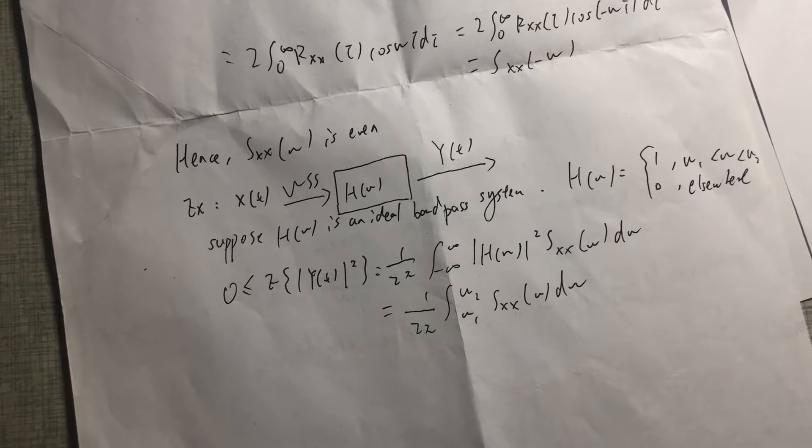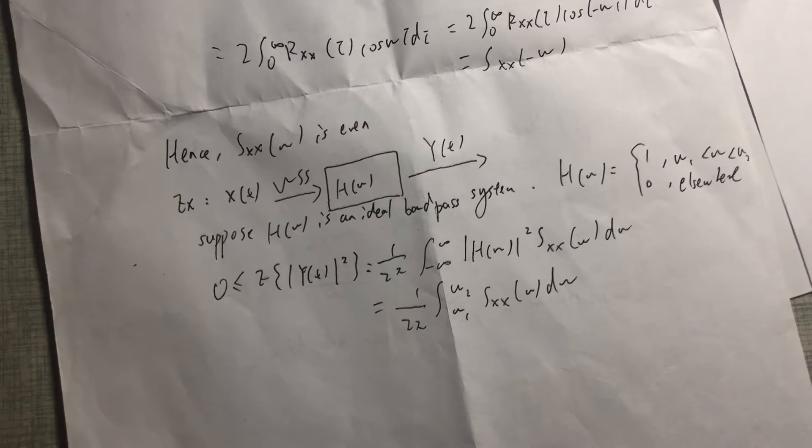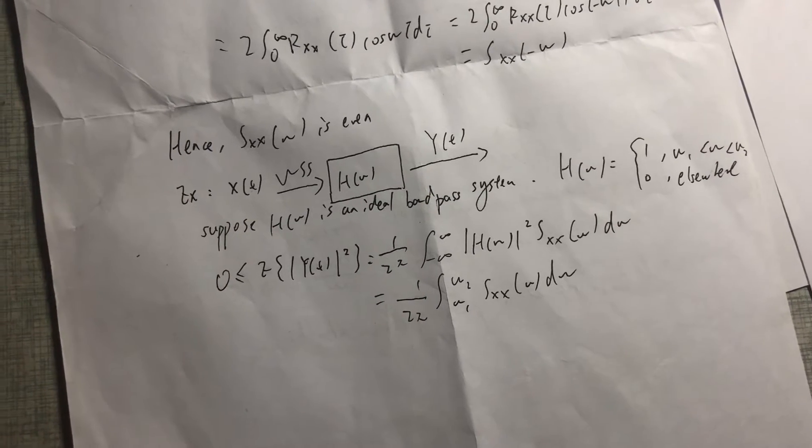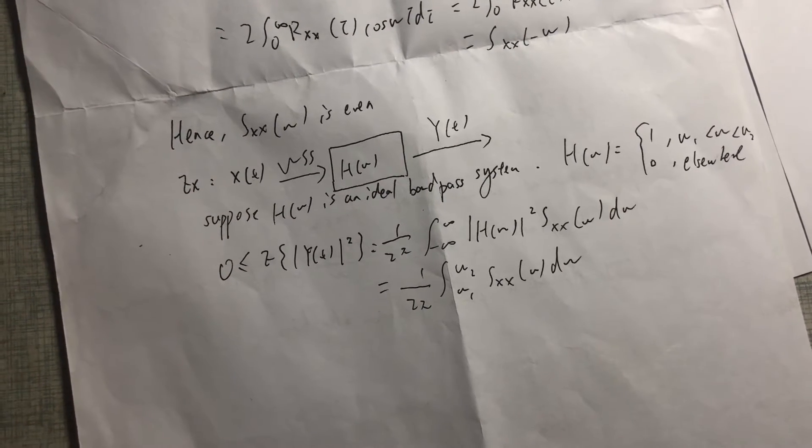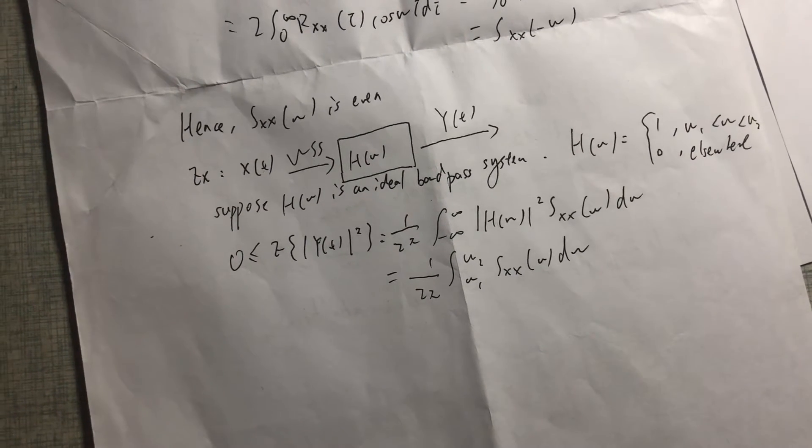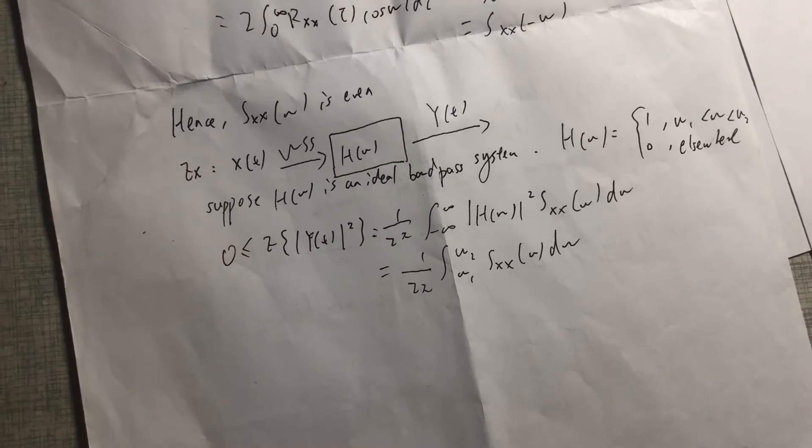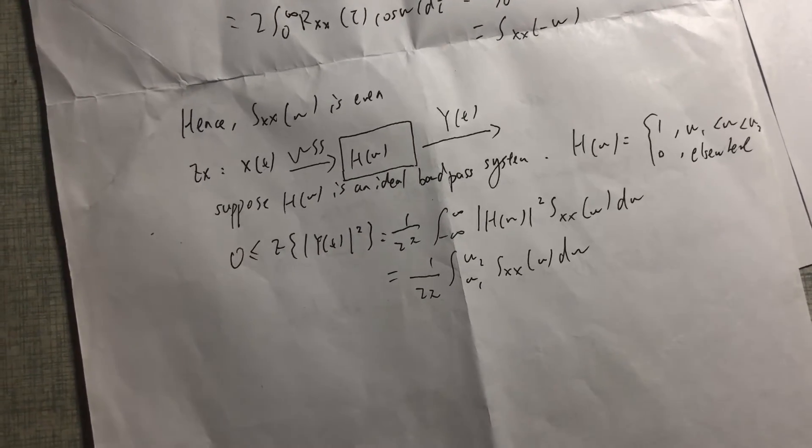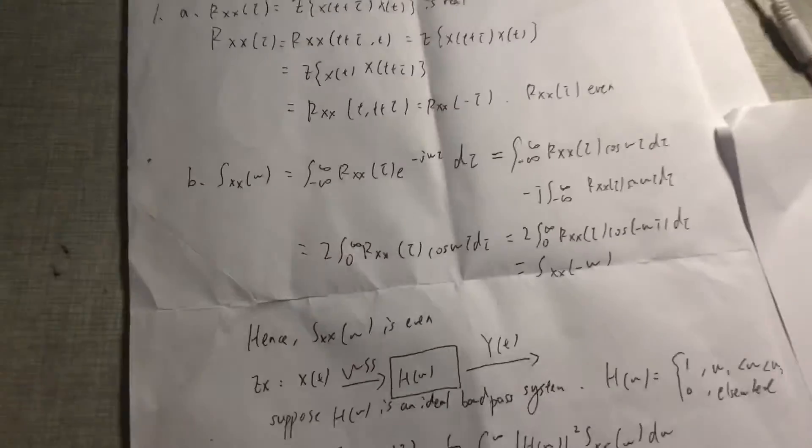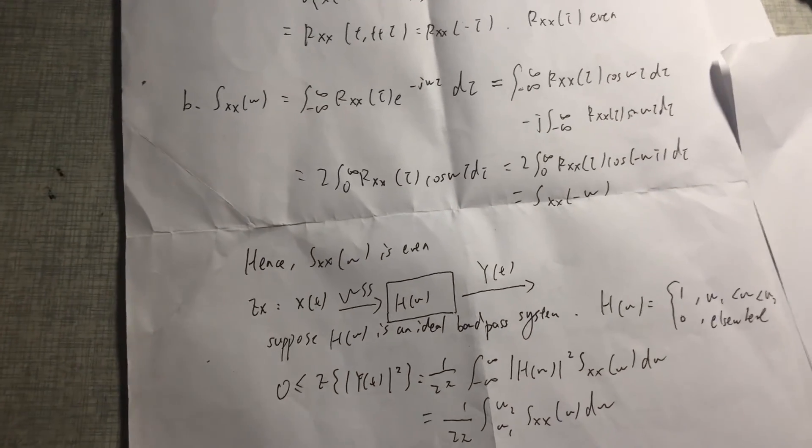So we see the area of S_XX(ω) in any interval is non-negative. This is possible only if S_XX(ω) is greater than or equal to zero everywhere. So that's the whole process for question one, thank you.